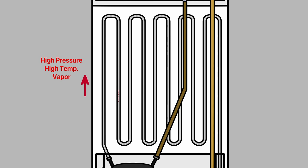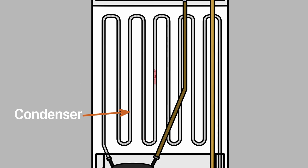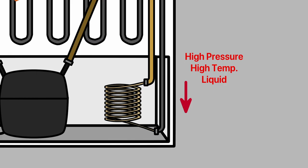When the high-pressure, high-temperature vapor refrigerant enters the cold condenser, the condenser absorbs the heat from the vapor refrigerant and completely converts it into liquid. The now high-pressure, high-temperature liquid refrigerant leaves the condenser and enters the throttle valve through the connecting pipe.